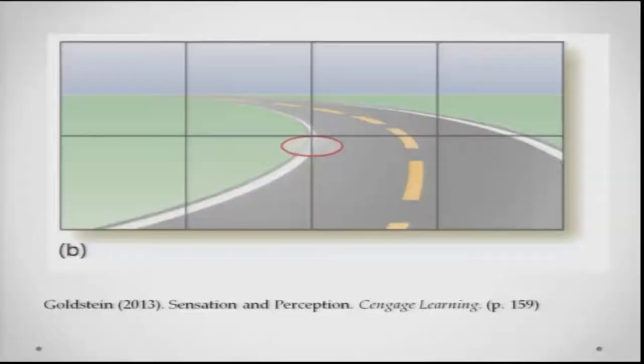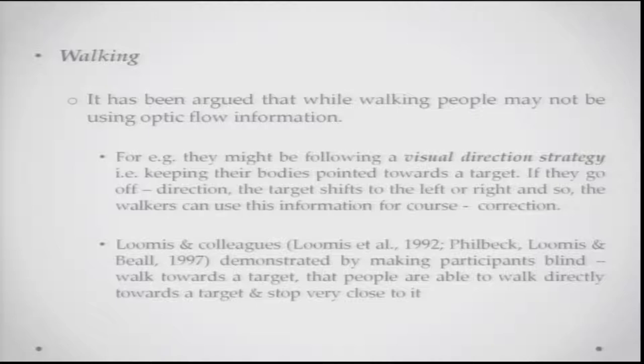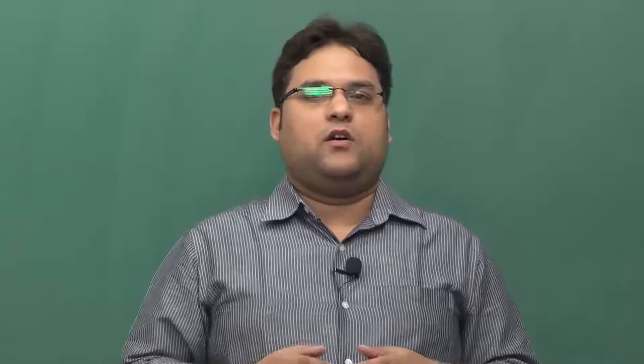Another aspect is walking and navigating the environment successfully. People are probably following what is called the visual direction strategy — keeping their bodies pointed toward a particular target. If walking on a straight road, you position your body such that the end of the road is your target. If you go off direction, say while texting, the target shifts to the left or right of where it was originally, and this information helps you perform course correction to return to the path toward your target.